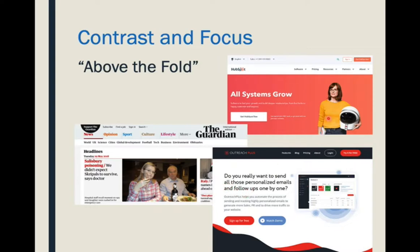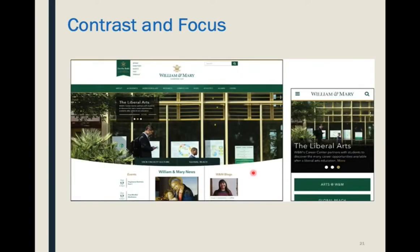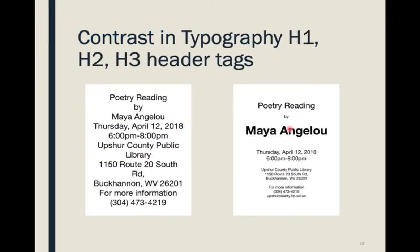Here we have great examples of contrast and focus. There's a person holding a helmet whose colors are contrasting with a very quiet background, so the figure really pops out on HubSpot. On the Guardian, using darks and lights, we've got a lot of white space that draws us to the title, their masthead, and then to the photograph. Down here we have call-to-actions or CTAs — a great big red button saying 'sign up for free.' That's going to draw our attention. Contrast allows us to focus users on where we want them to go.